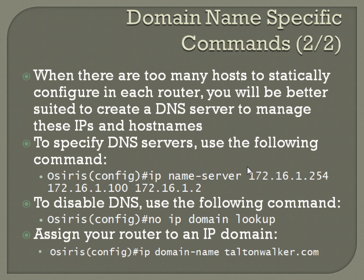To disable DNS, use the following command from config mode: no ip domain lookup. And to assign your router to an IP domain, it's: ip domain-name [your domain]. This doesn't actually have to be a URL. This command is going to be pretty important when we start talking about SSH — you have to have an IP domain set up on your router to enable SSH to work properly.